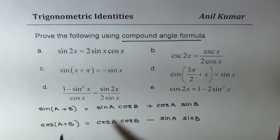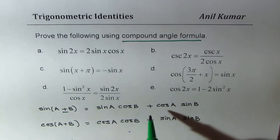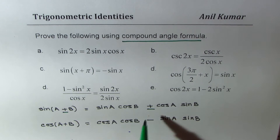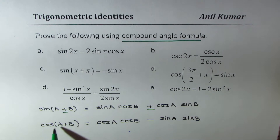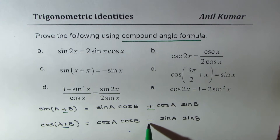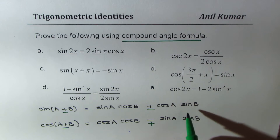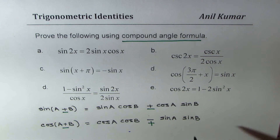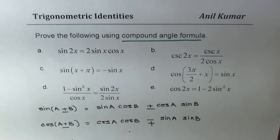For A minus B, just change the sign. So sine(A − B) follows the same pattern with the sign changed, and for cos(A − B), the sine term becomes positive instead of negative. So what we get here is actually four formulas, and this set of formulas will be utilized to prove the six identities we have.